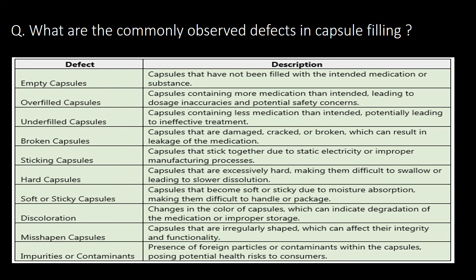What are the commonly observed defects in capsule filling? The ten very commonly observed defects in capsule filling are: empty capsules, overfilled capsules, underfilled capsules, broken capsules, sticking capsules, hard capsules, soft or sticky capsules, discoloration, misshaped capsules, and impurities or contaminants.